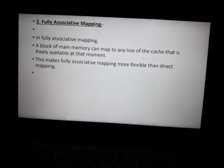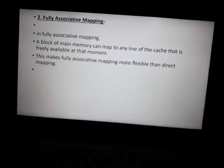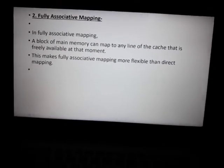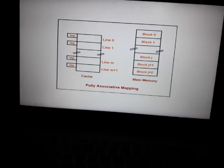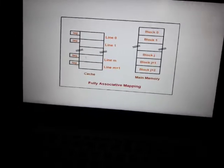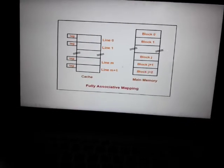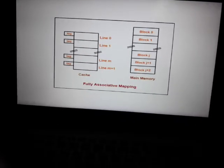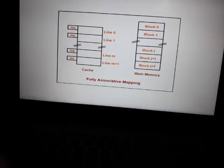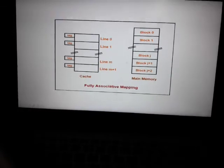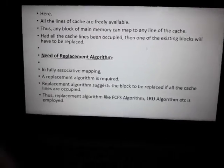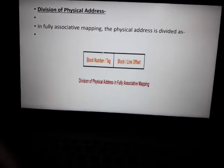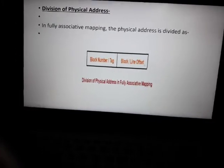In associative mapping, a block can map to any line of the cache that is freely available at that moment. Here we have blocks and lines, and the required word can be placed in any available line. This is fully associative mapping. The physical address is divided into block number and block offset.